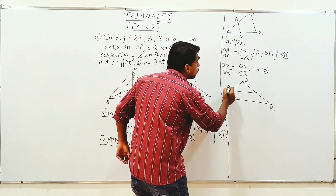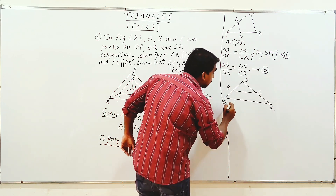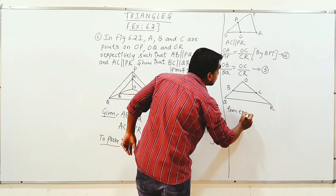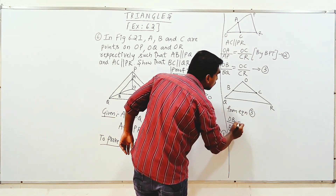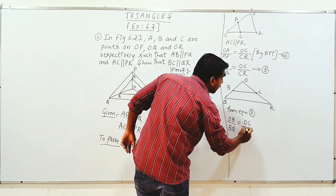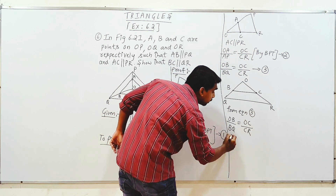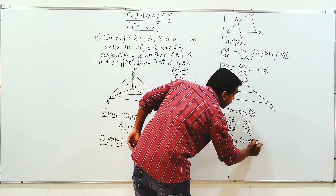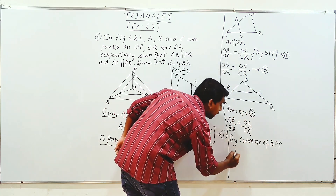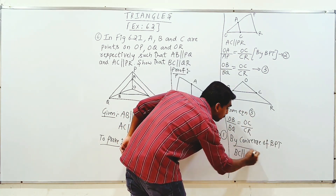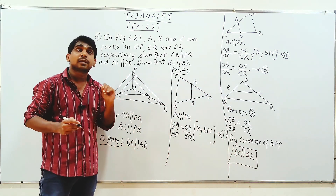This is O, B by BQ is equal to OC by CR. From Equation 3: OB by BQ is equal to OC by CR. So from this, BC is parallel to QR by the converse of BPT theorem.